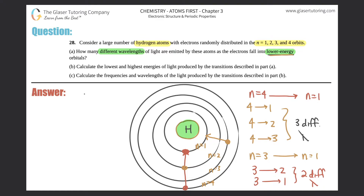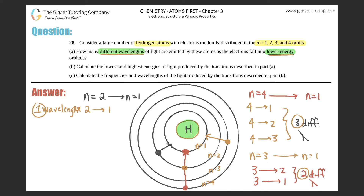Last but not least, we do n equals 2 to n equals 1. Starting at n equals 2 and going down to the first shell — are there any stops along the way? No, there are not, because you can't stop in the middle of a shell. So there's only one wavelength, because you can only go from 2 to 1. Now, how many different wavelengths total? There were 3 when we did 4 to 1, 2 when we did 3 to 1, and 1 from 2 to 1. So 3 plus 2 plus 1 — there's a total of 6 different wavelengths, all corresponding with 6 different energy amounts.